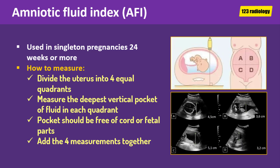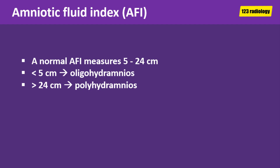Amniotic fluid index is used in singleton pregnancies at 24 weeks of gestation or more. In this method, the uterus is divided into 4 equal quadrants, measuring the deepest vertical pocket of fluid in each quadrant using the same technique as for maximum vertical pocket, then adding the 4 measurements together to give the amniotic fluid index value in centimeters. A normal amniotic fluid index measures between 5 to 24 centimeters. Less than 5 centimeters is oligohydramnios and more than 24 centimeters is polyhydramnios.